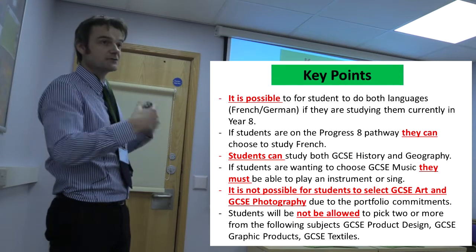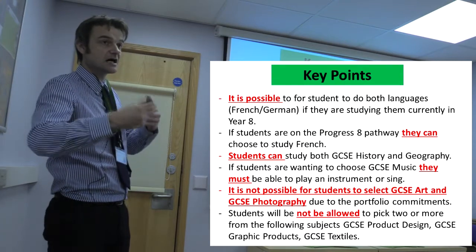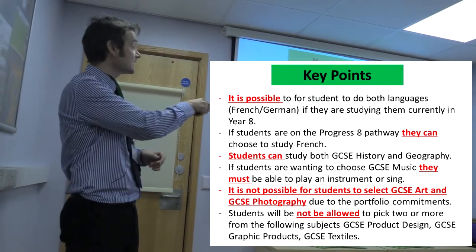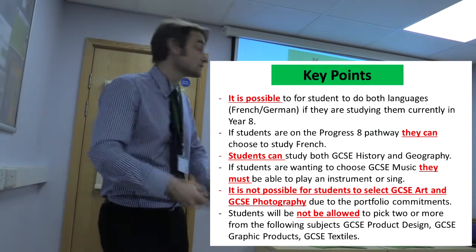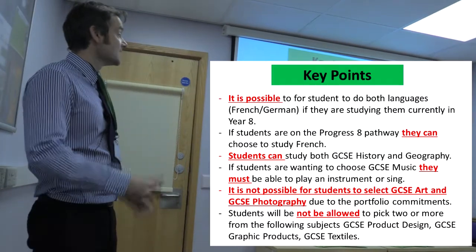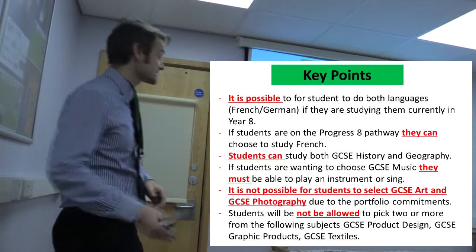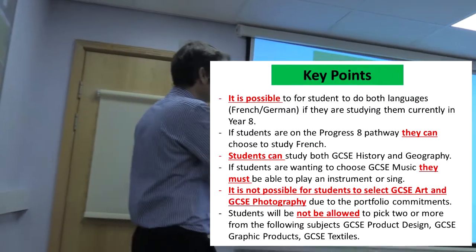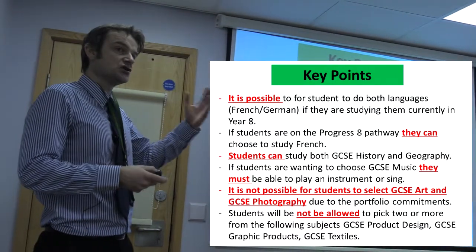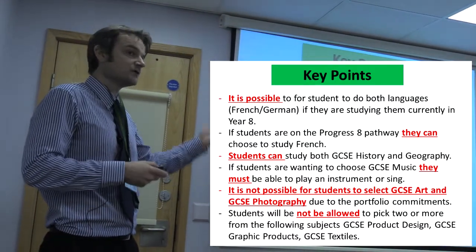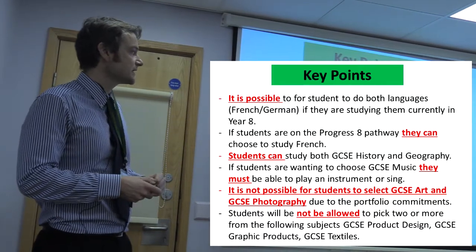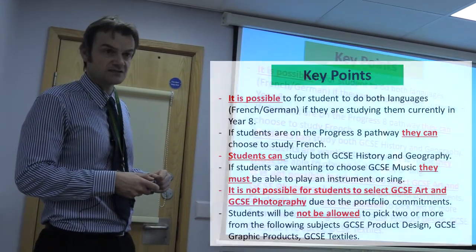You must have done German in Year 8 to do it in Year 9 and pursue it at GCSE. But you can do both languages — we do get some students who do both languages. Likewise, in the humanities side of things, if a student is on the EBAC pathway and circles History, they can still do Geography in one of their free option choices.